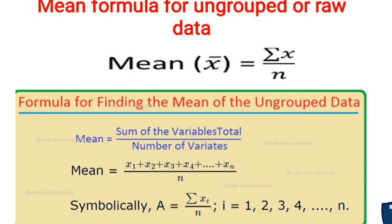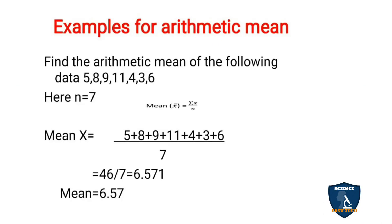To find Σx in the numerator, you add all the values given and divide by the total number of values in the data. Let's see an example: find the arithmetic mean of the following data — 5, 8, 9, 11, 4, 3, 6.